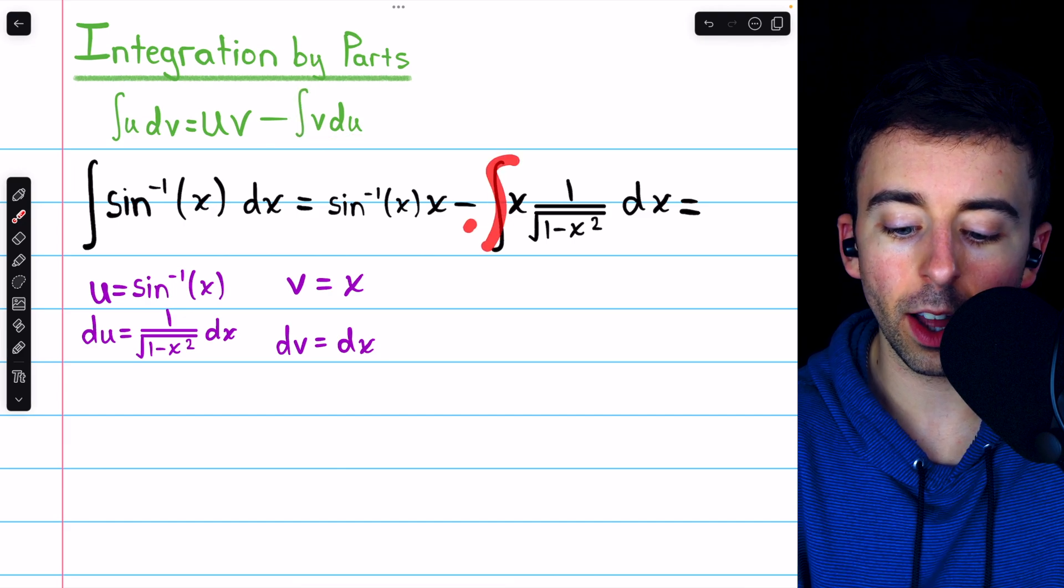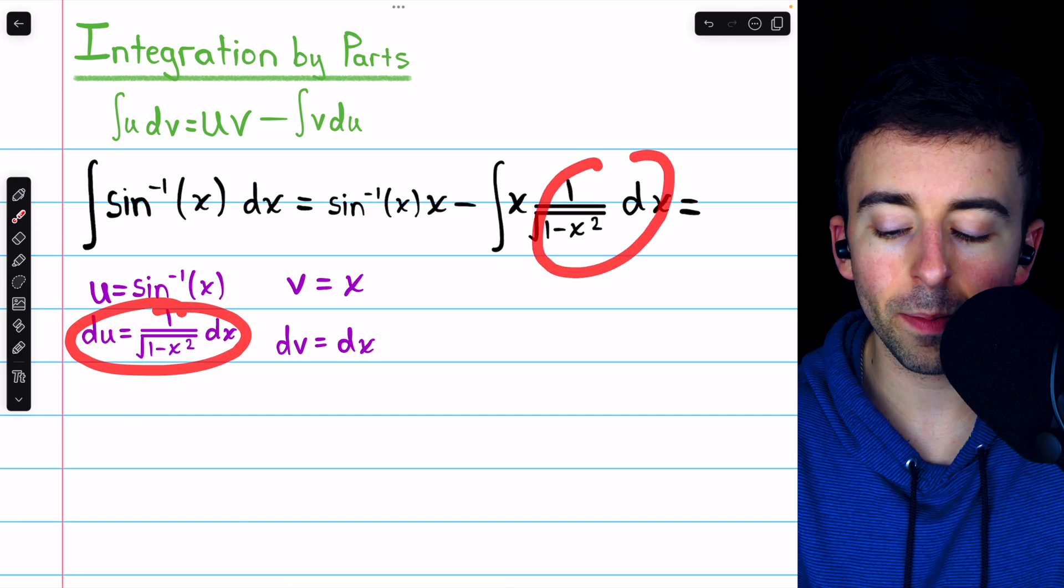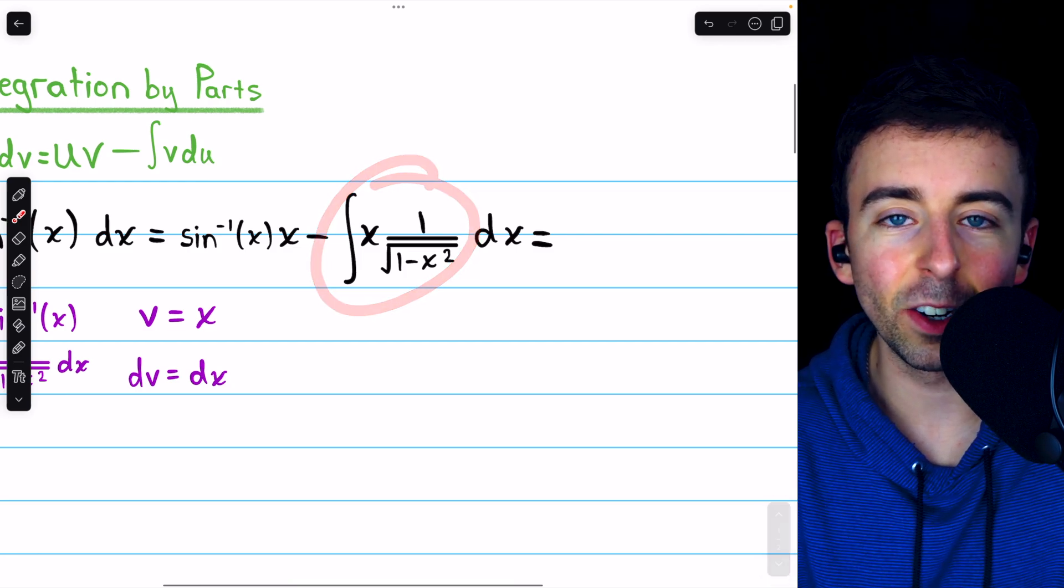So minus the integral of v, which is x, times du, which we see there. Alright, so this is what it is, and then we'll just have to deal with this integral.